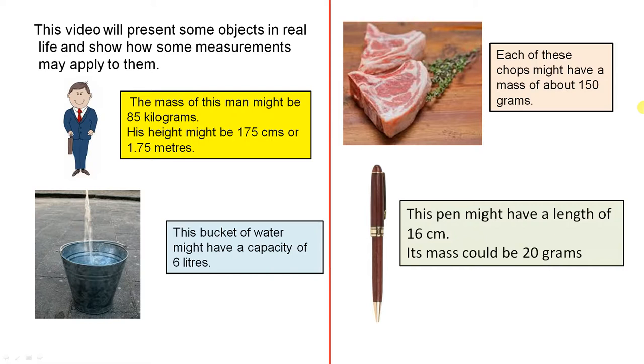The mass of this man might be 85 kilograms. His height might be 175 centimeters or 1.7 meters. This is just an example for one person. A child, for example, might be 30 kilograms and the height of the child might be 1.1 meters. It depends on the individual in question.